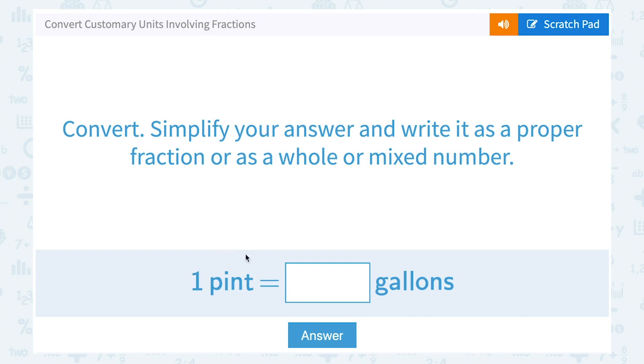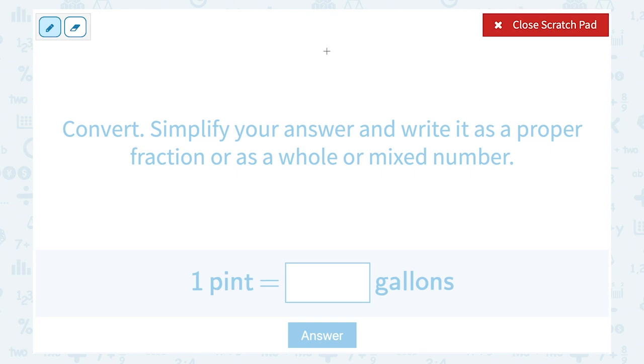So we have one pint and we want to know how many gallons is that? Well, the first thing I need to know is my conversion factor. My conversion factor tells me there are eight pints in one gallon.